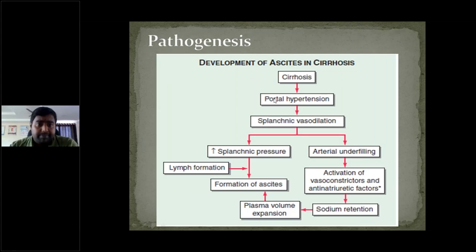In the pathogenesis of ascites in cirrhosis: increased portal pressure leads to splanchnic vasodilation, which increases splanchnic pressure and lymph formation, leading to ascites. Arterial underfilling activates vasoconstrictors and anti-natriuretic factors due to perceived hypotension, signaling the renal system to activate the renin-angiotensin system, causing sodium and water retention and further plasma volume expansion, again leading to ascites formation.